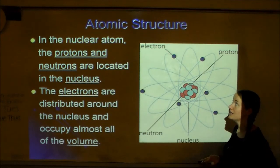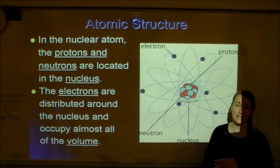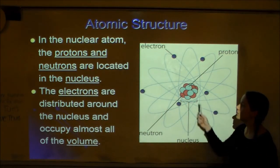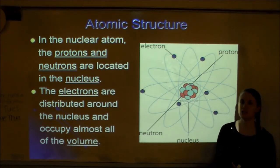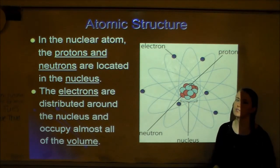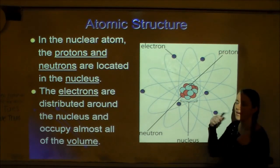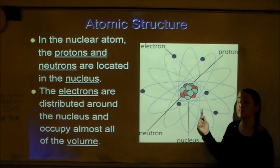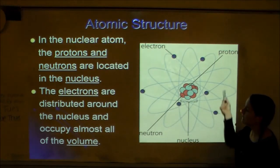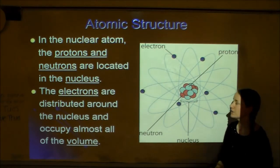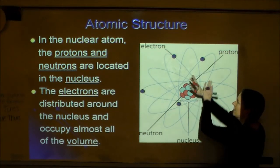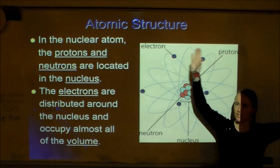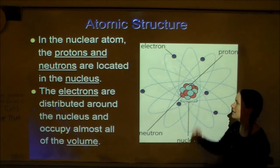Since Rutherford determined the plum pudding model was incorrect, he came up with his own model — Rutherford's model, or the nuclear atom. In this model, the protons and neutrons are located in the nucleus. Most people, if asked to draw an atom, would draw something similar to Rutherford's model. The electrons are distributed around the outside and occupy most of the volume. The nucleus is very tiny in the center but holds all the mass; the electron cloud is very large and has all the volume.